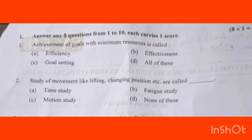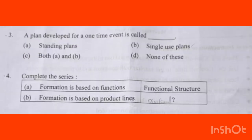There is a plan developed for a one-time event — it is called dash. Options are: standing plans, single use plans, both A and B, or none of these. The correct answer is Single Use Plan. If you want to prepare or develop a plan for a one-time event, you use a single use plan.